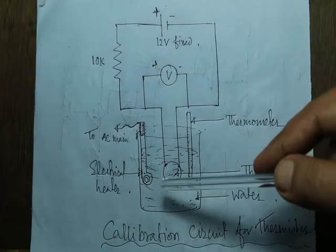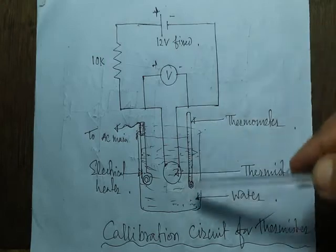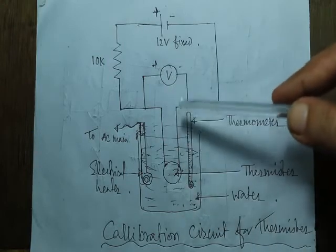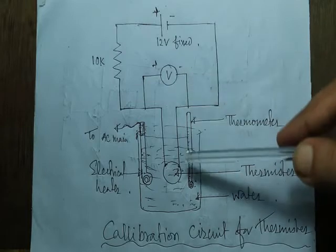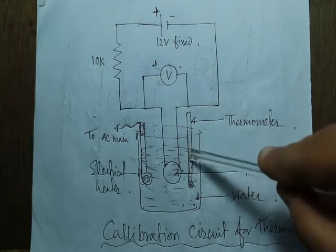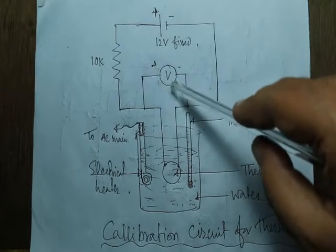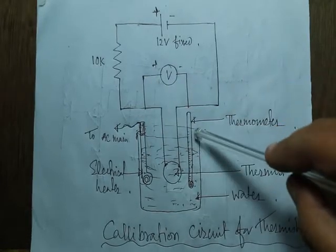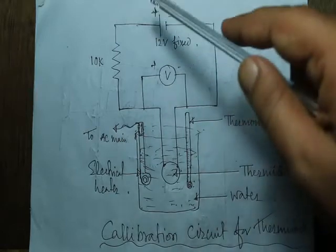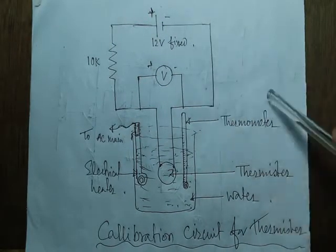We don't take measurements while raising the temperature because it rises too fast and the results would not be in equilibrium. But when the temperature decreases, it decreases slowly, so we can take the voltage drop readings corresponding to each temperature value more accurately.